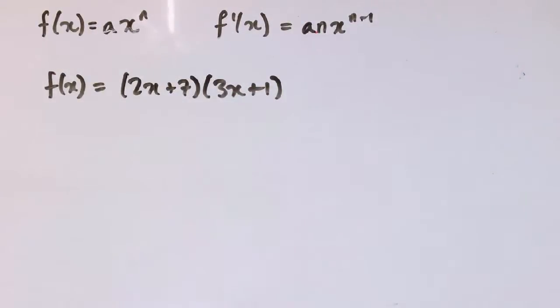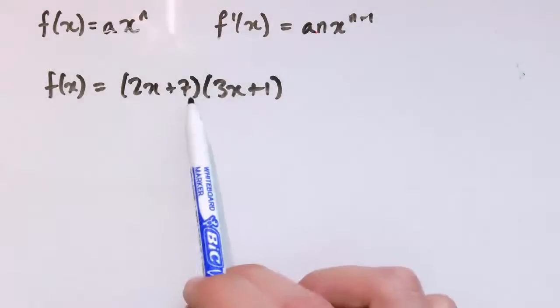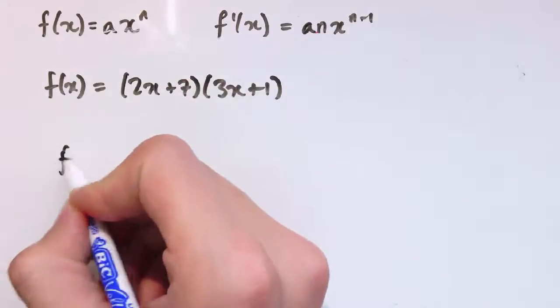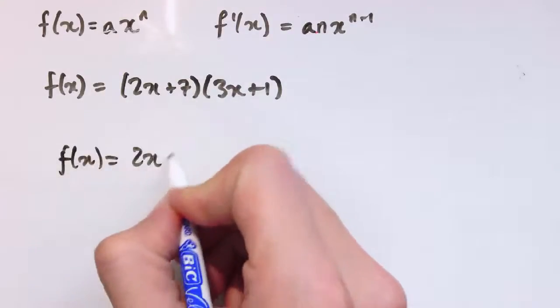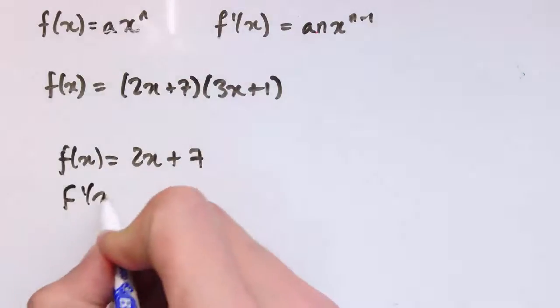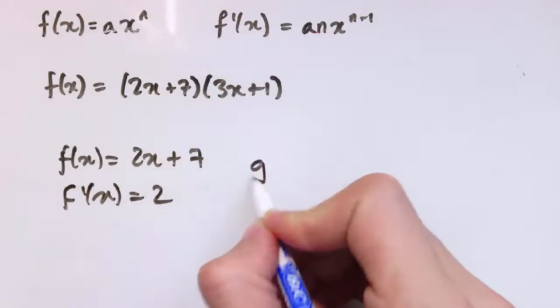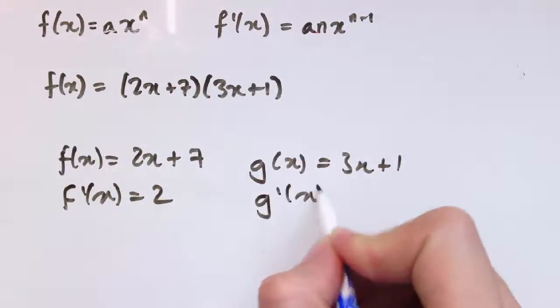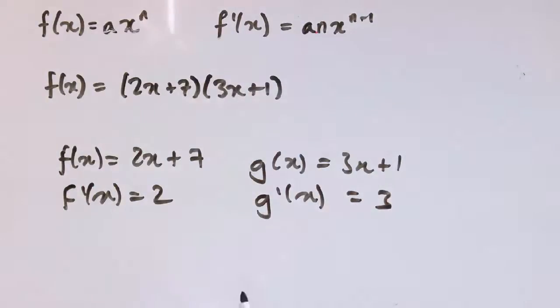Okay, so now that's not correct. We haven't got any rule that says if I take two functions multiplied together, that their derivative will be those things multiplied together. So just because it is the case that when I differentiate f(x) equals 2x plus 7, the derivative is 2, and if I have g(x) equals 3x plus 1, then the derivative of that is 3, but that doesn't mean that the derivative of this is 2 times 3.